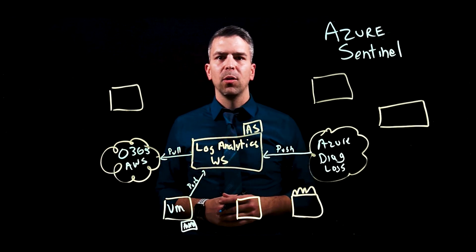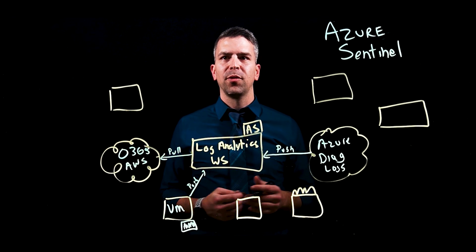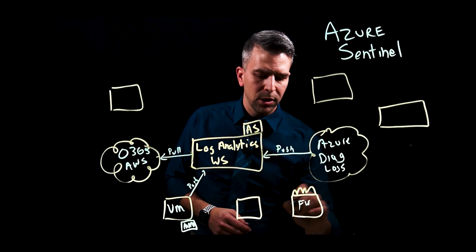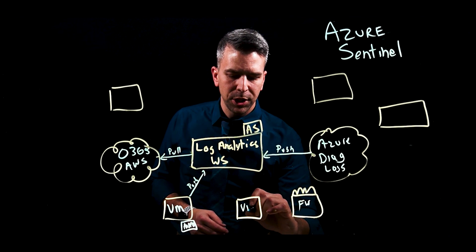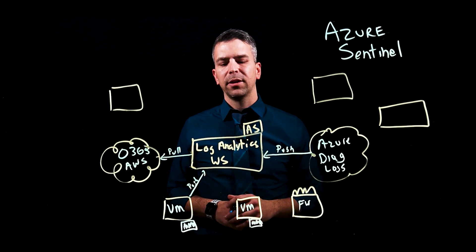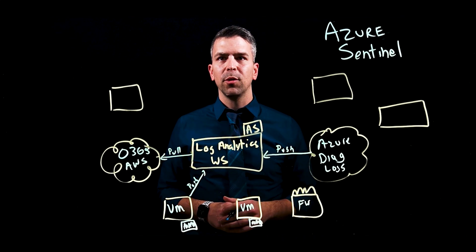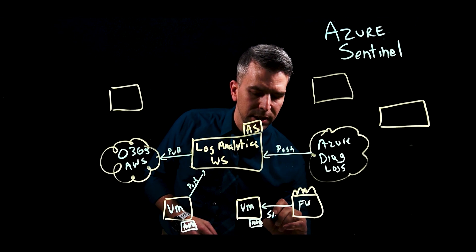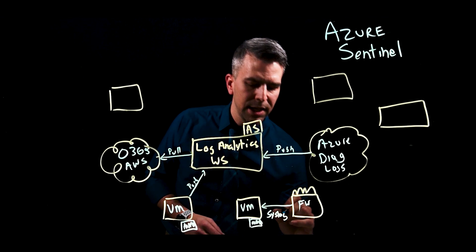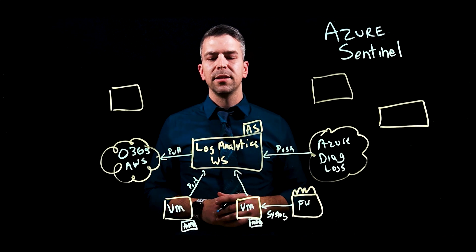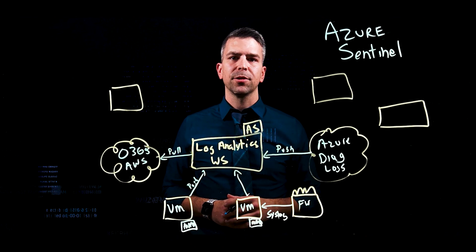The question after that becomes: what about third-party appliances such as firewalls or web proxies? For your firewalls, you will need to stand up another virtual machine on-premise or in the cloud with the Microsoft Monitoring Agent, and configure this as a CEF collector. We have a script that will configure CEF collection, and on your firewall you configure syslog to send that data to the virtual machine running the MMA. We will parse that data and send it into Log Analytics to be used by Azure Sentinel.